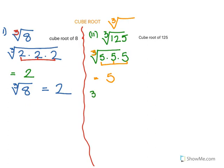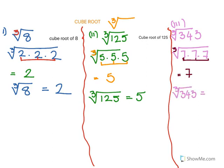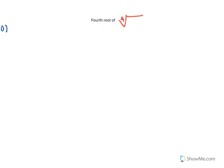For the third sum, it is cube root of 343. Now 343 is 7 into 7 into 7. We have a cube root, so we need to make groups of 3: 1, 2, 3 — so cube root of 343 equals 7.